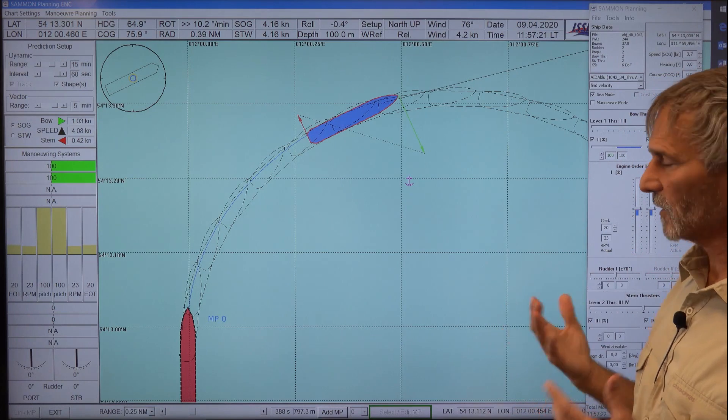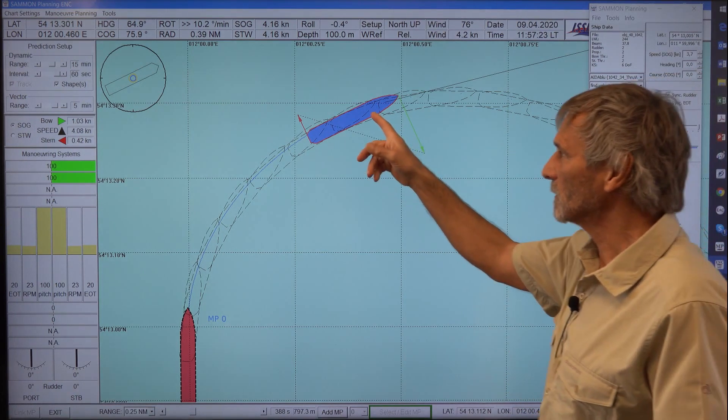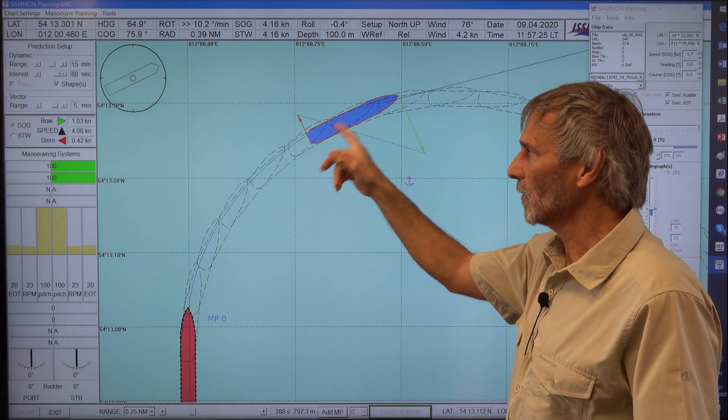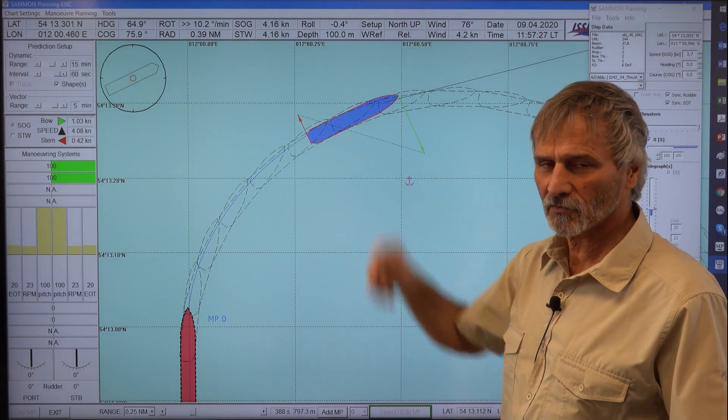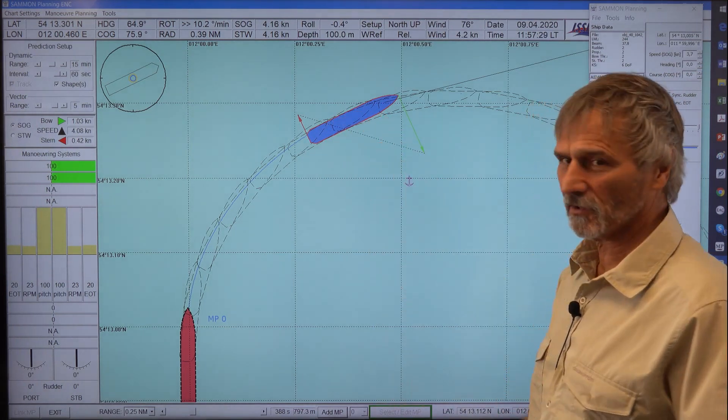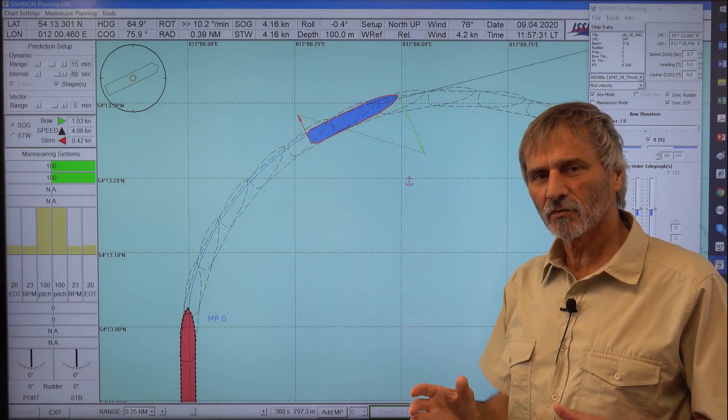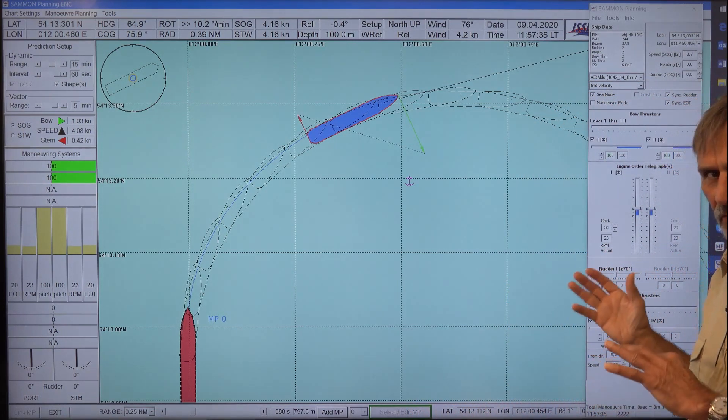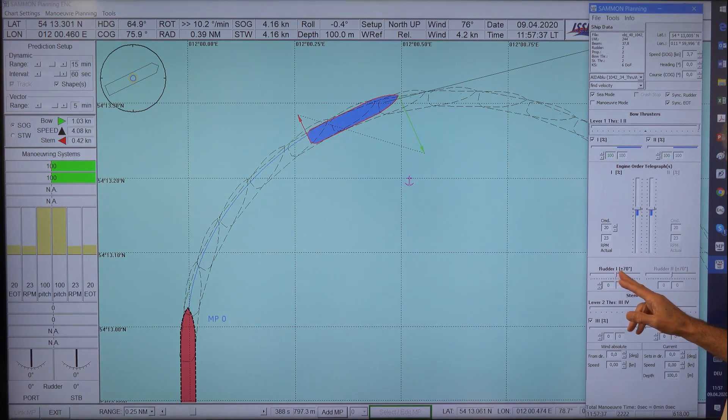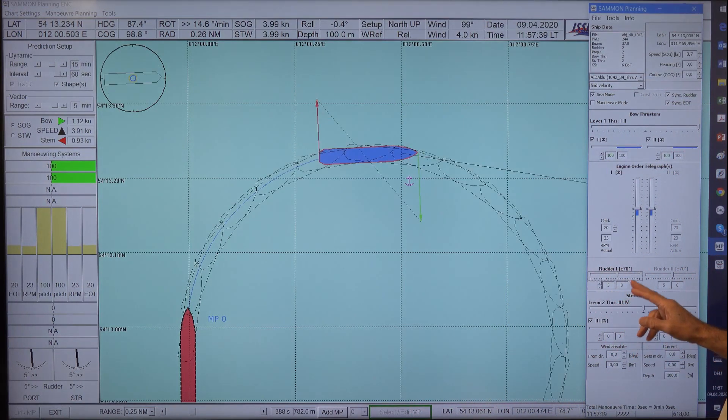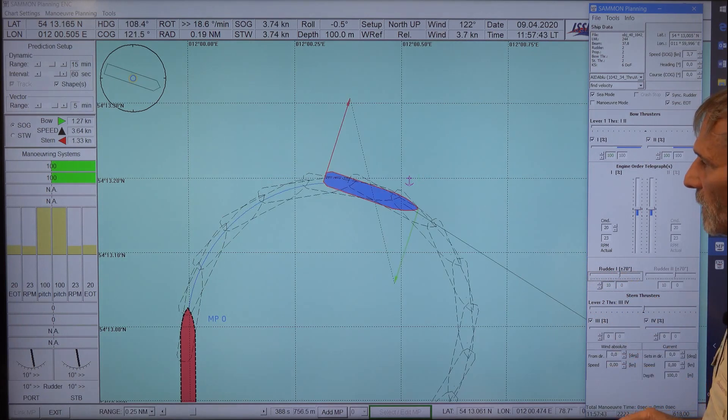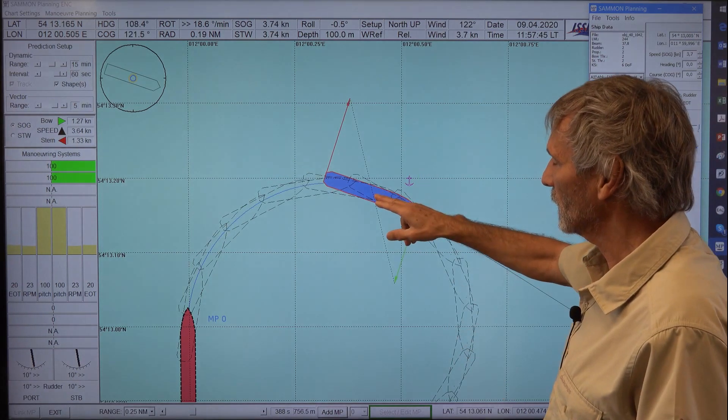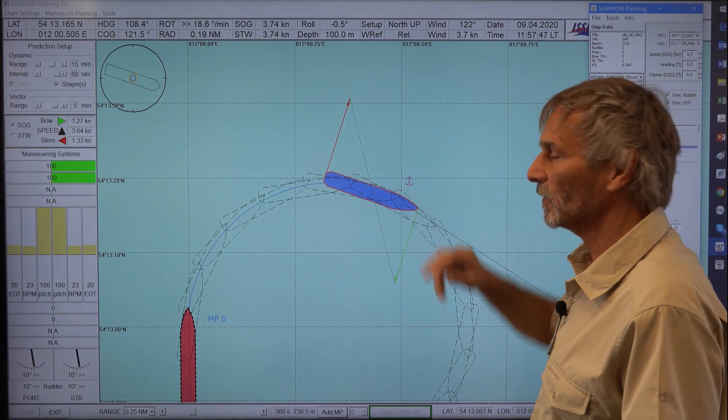But the clear difference is, here now the pivot point is going to the stern, more to the stern, close to the center. If you want to do it really in the center, then we could combine the bow thruster with some rudder. So five degrees rudder. So it's nearly at the center with 10 degrees rudder. You see it's nearly at the center of gravity. So the pivot point is here.